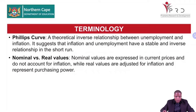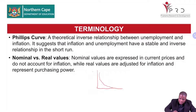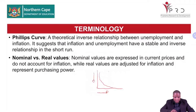The Phillips curve is a graph done under the business cycle showing an inverse relationship between inflation and unemployment. It suggests that inflation and unemployment have a stable and inverse relationship in the short run — a negative relationship. When unemployment increases, inflation decreases. When inflation decreases, unemployment will increase. It is represented in a graph where there is a negative relationship — when one goes up, the other comes down.